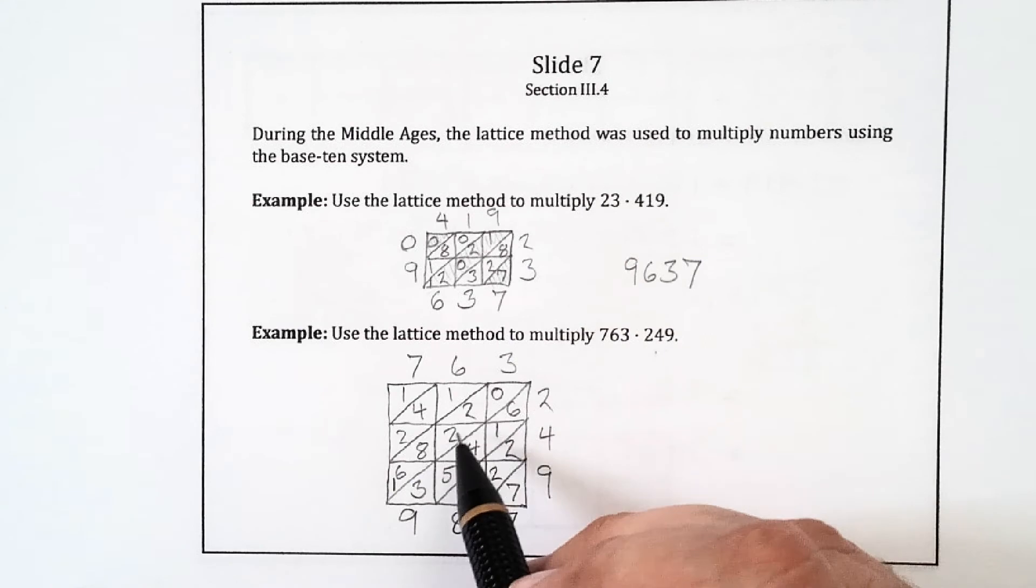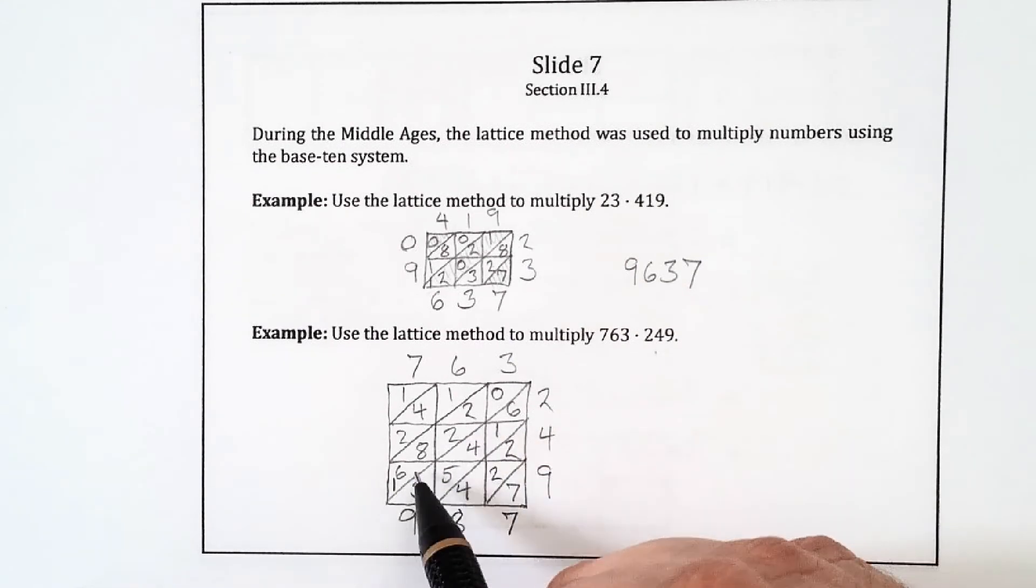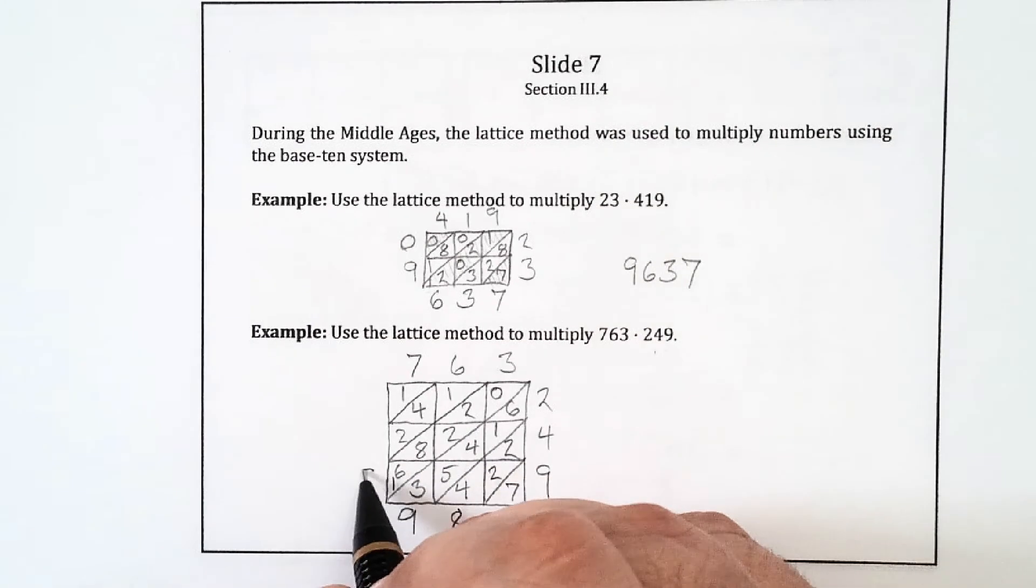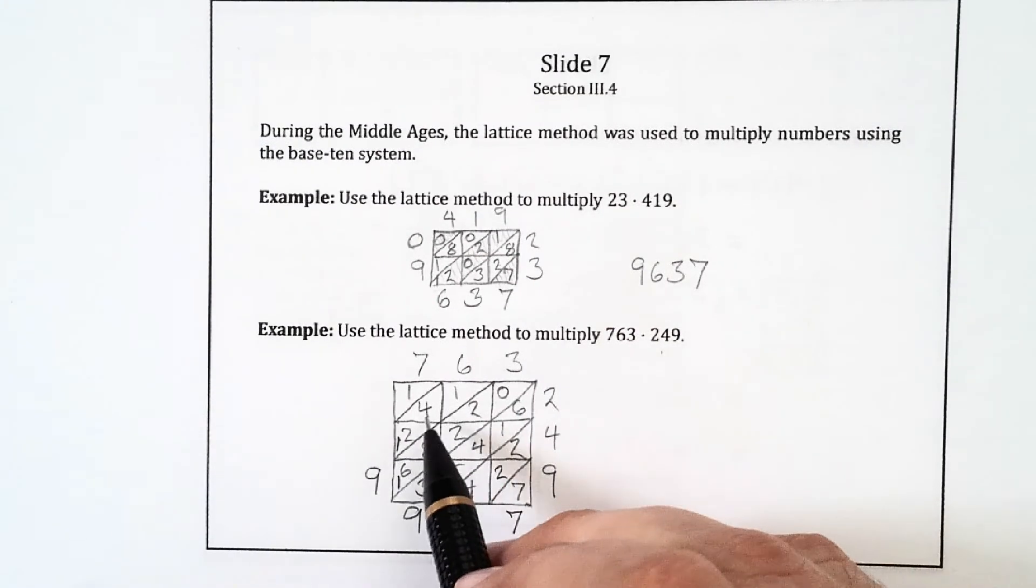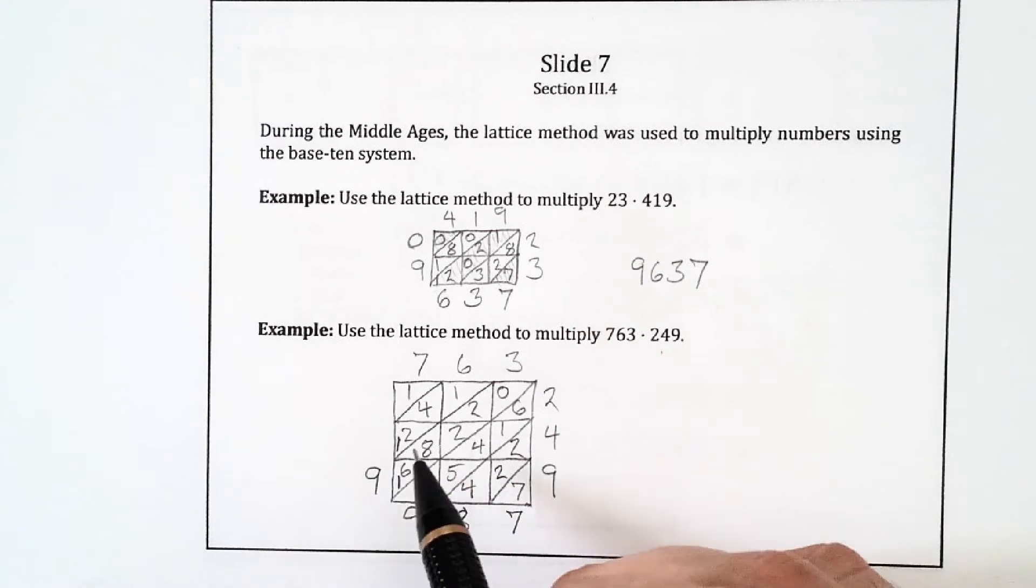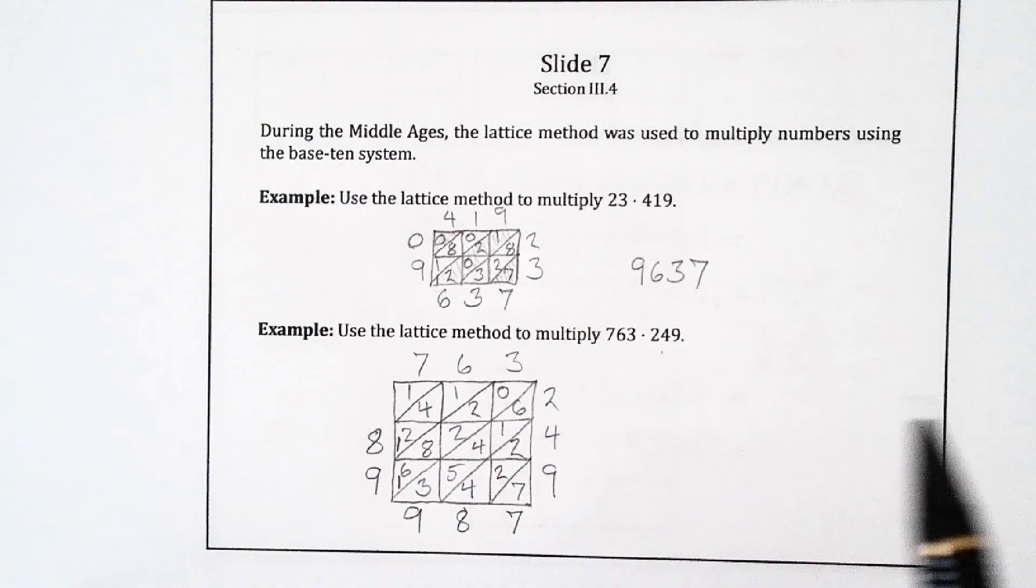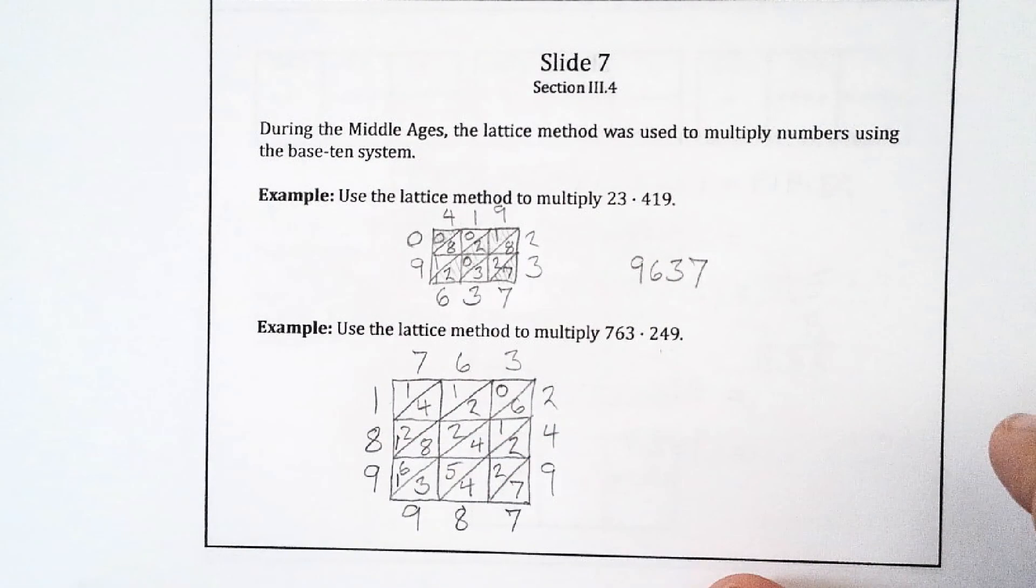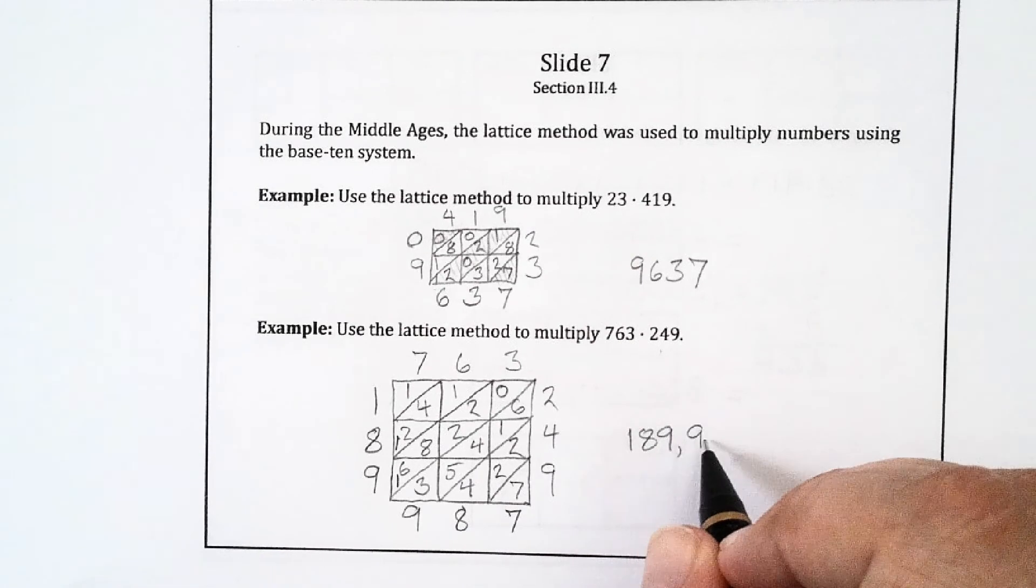Now I have 0, 2, 2, 8, 6, and 1. 2, 2, and 6 add up to 10. 8 and 1 add up to 9, so I get another 19. I put a 9, carry the 1. Now I have 1, 4, 2, and 1, which gives me 5, 6, 7, 8. So that's just an 8 there. And then this top corner just gives me 1. So my answer is 189,987.